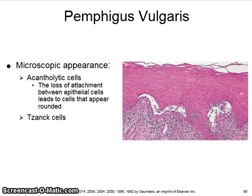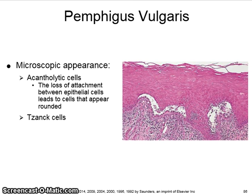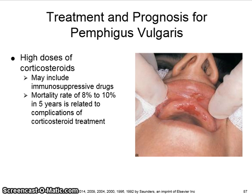The microscopic appearance includes acantholytic cells. The loss of attachment between epithelial cells leads to cells that appear rounded. These rounded acantholytic cells are called Tzanck cells. The diagnosis of pemphigus vulgaris is made by biopsy and microscopic examination. Treatment includes high doses of corticosteroids, sometimes in combination with immunosuppressive drugs.